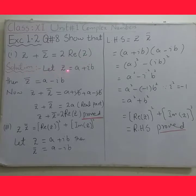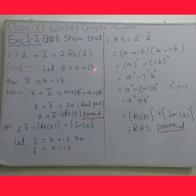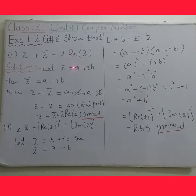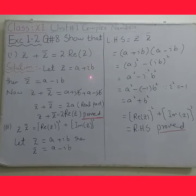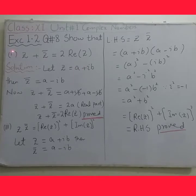Let z be equal to a plus iota b. You can also take z equals to x plus iota y or any other notation. In z equals to a plus iota b, Real(z) will represent a and Imaginary(z) will represent b. So b is the imaginary part and a is the real part. Okay.